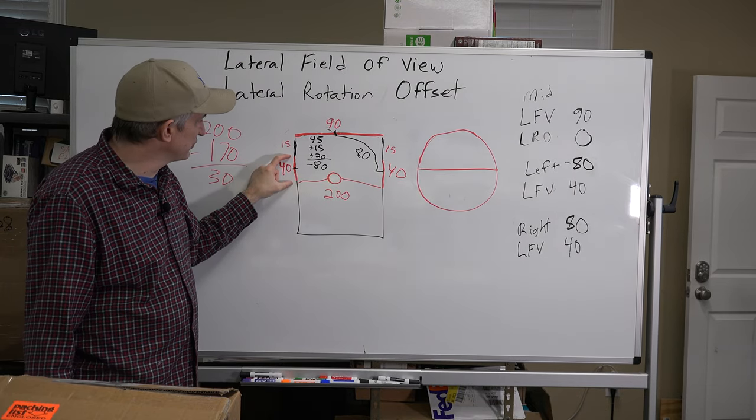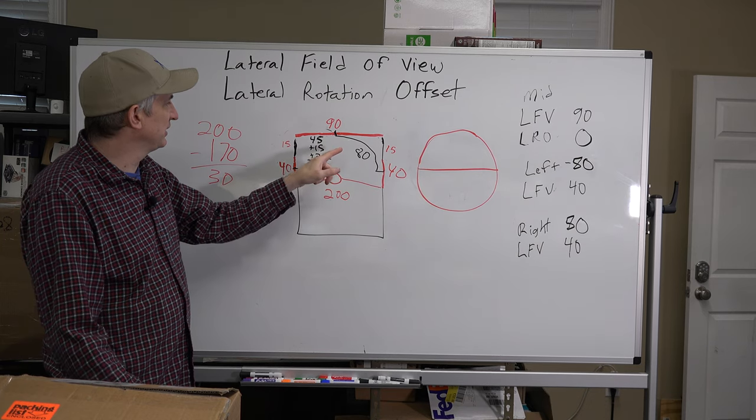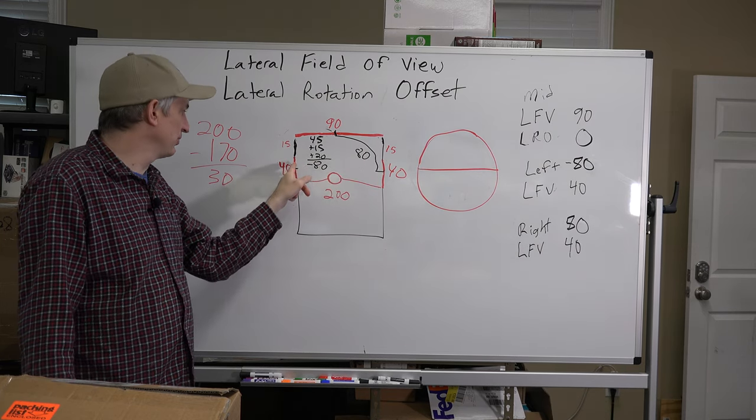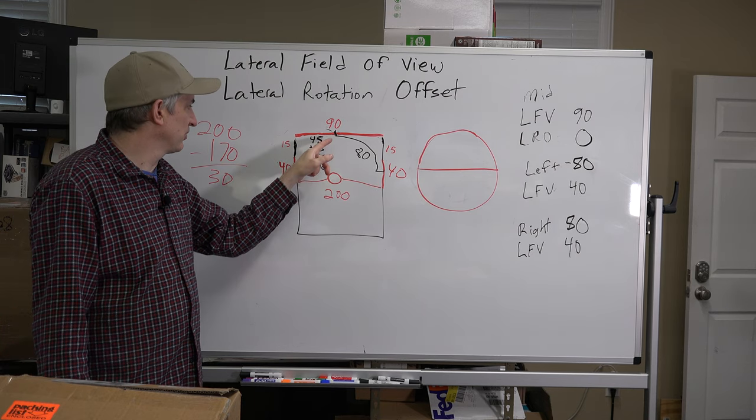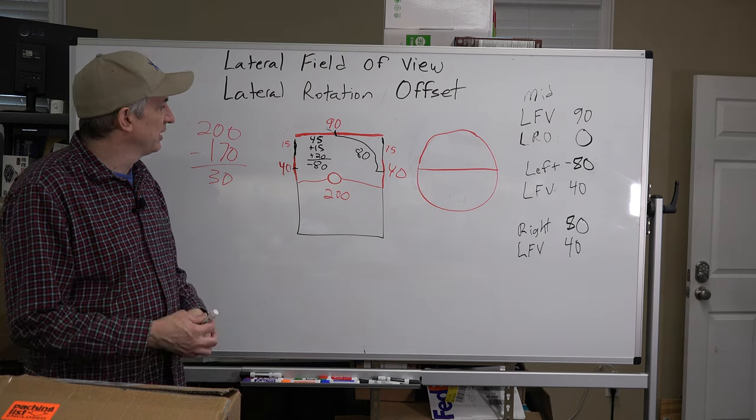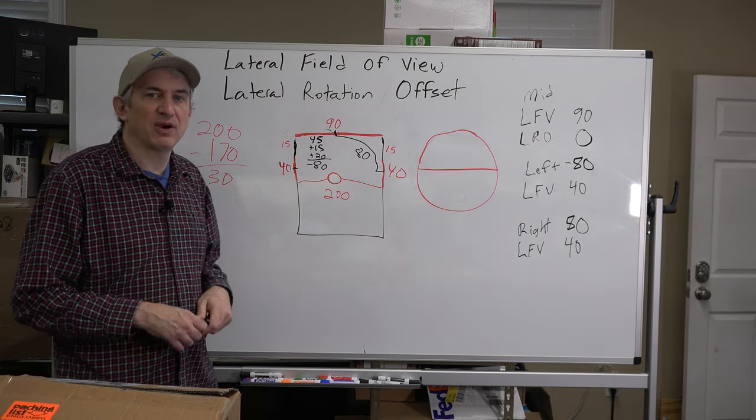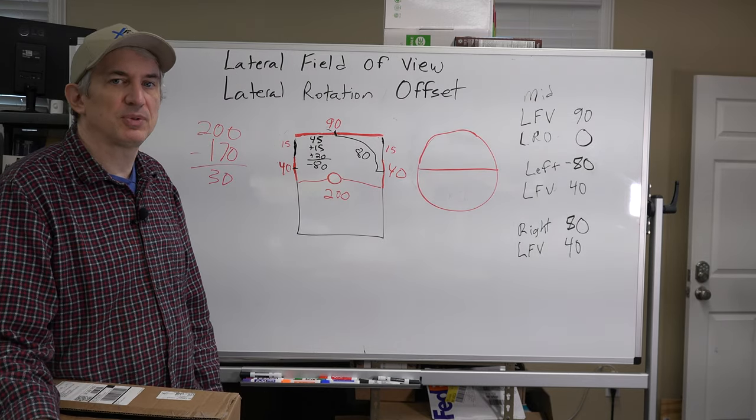Left screen negative 80 for the lateral rotation offset with a lateral field of view of 40. So the screen is showing us 40 degrees of field of view, and the center of the screen is 80 degrees rotated around. Of course this side it's negative 80, this side it's positive 80. And hopefully that makes sense, and hopefully that corrects my error that I made, and I'm going to re-upload this video.